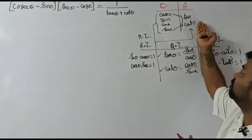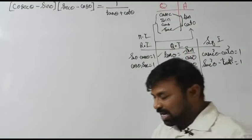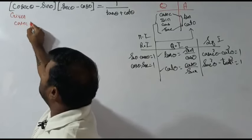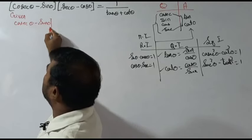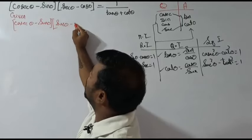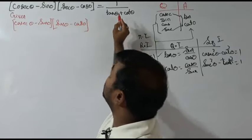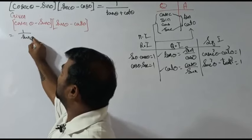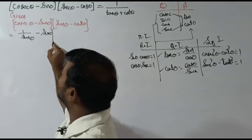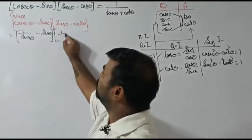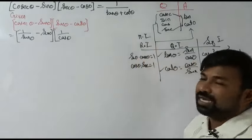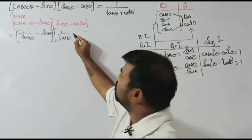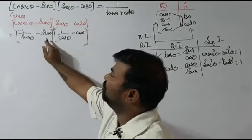Let's start working. The given expression is cosecant θ minus sine θ, into secant θ minus cos θ. I like to start with the given expression. Straight away, I write cosecant θ as 1 divided by sine θ — we still have minus sine θ inside. For secant θ, I write it as 1 divided by cos θ, minus cos θ. So everything is now in terms of sine and cos.